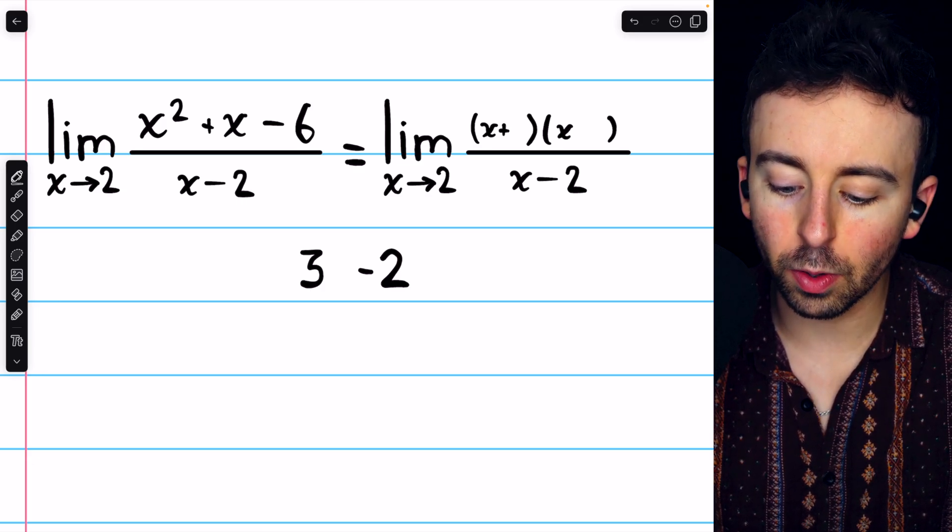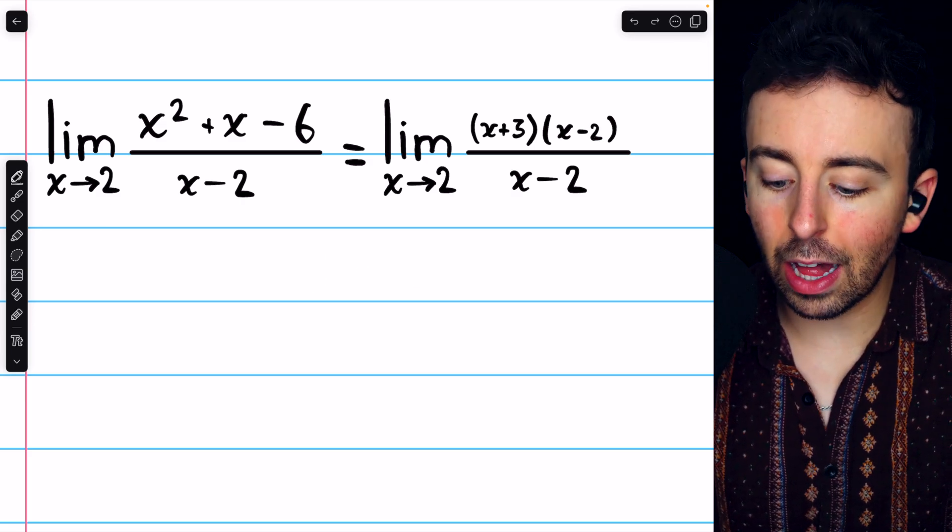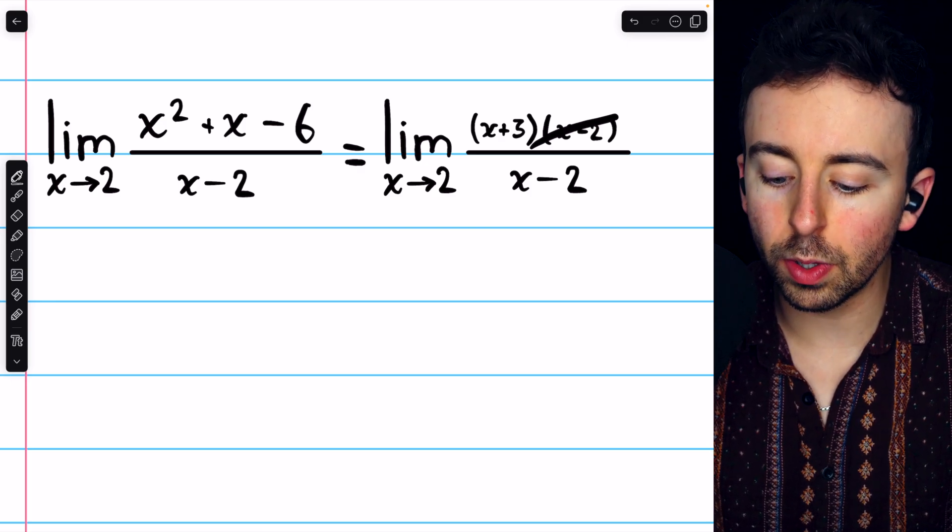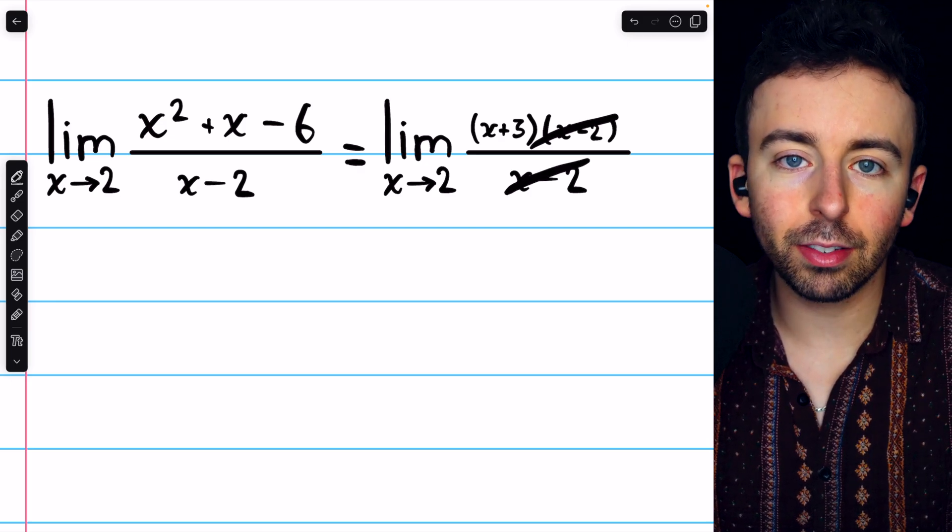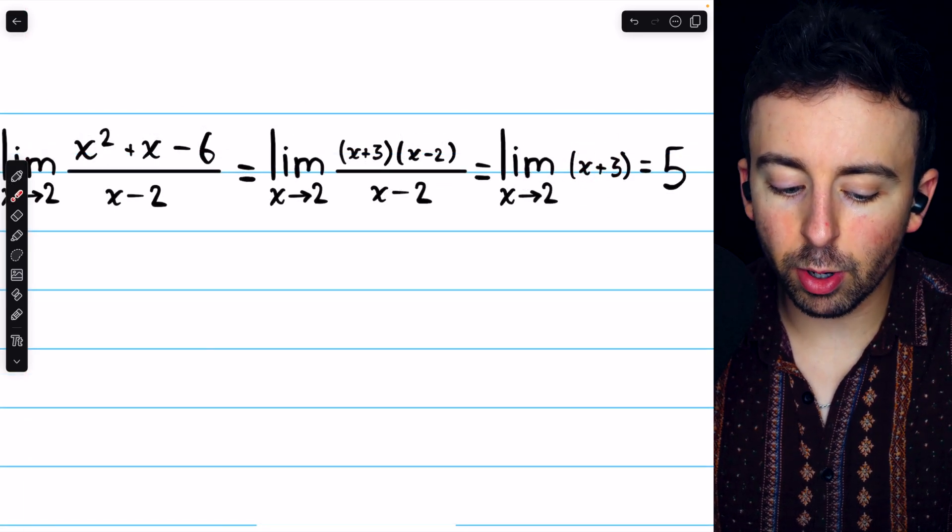Thus, we factor this into x plus 3 and x minus 2. And this allows us to evaluate the limit by canceling that factor of x minus 2 in the numerator with the x minus 2 in the denominator. That just leaves the limit of x plus 3.